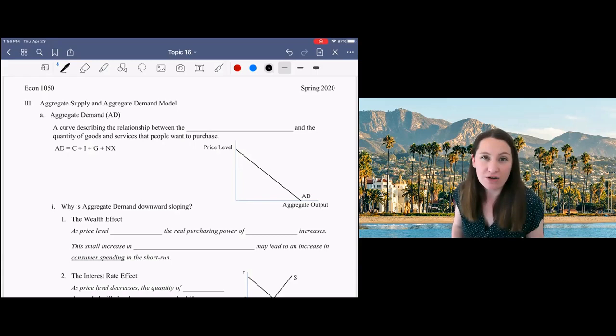In the model of supply and demand, we're talking about one single market and prices in that market. In the model of aggregate supply and aggregate demand, we're talking about total supply and total demand in the economy.